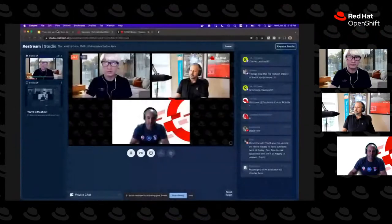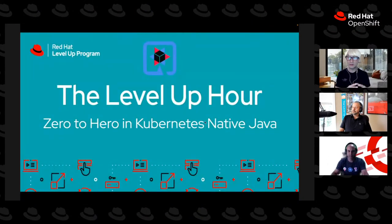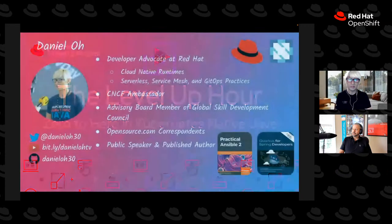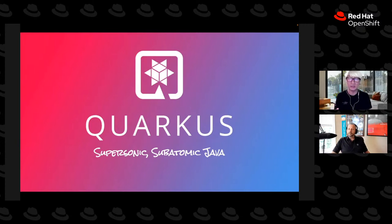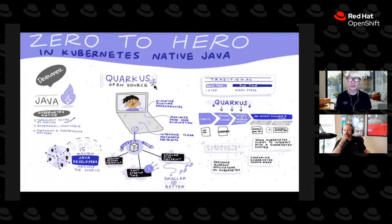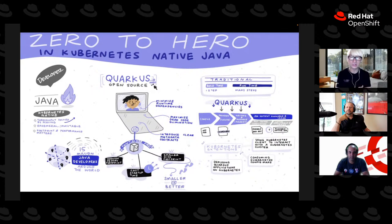I've got a bunch of demos today — just feel free to chime in and interrupt any time. I've already published a lot of them on my YouTube channel. I'm going to share my screen. Today we'll really talk about zero to hero in Kubernetes-native Java. As developer advocate at Red Hat, you can find all my contact info on Twitter at danieloh.tv and my GitHub repo — feel free to take any source code.